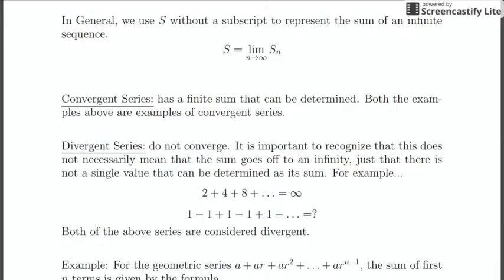In general, we're going to use S without a subscript to represent the sum of an infinite sequence. When you take the limit as n goes to infinity of S sub n, the result is going to be the infinite sum of that series, and we let S by itself refer to that. This gives us two different types of series to talk about. A convergent series has a finite sum that can be determined. Both of the examples we just looked at — 0.3 plus 0.03 plus 0.003 to infinity, and one-half plus one-quarter plus one-eighth to infinity — were examples of convergent series.